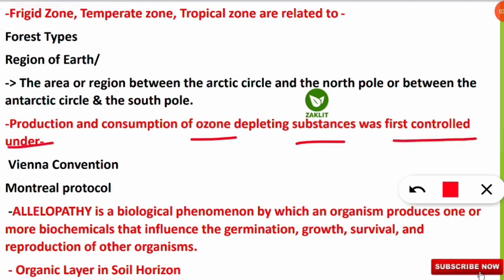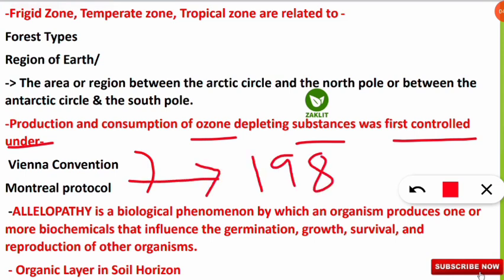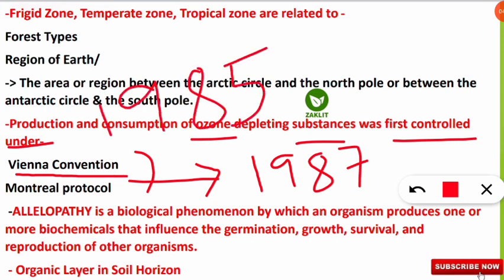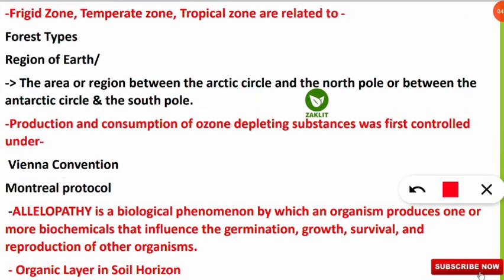The next question: production and consumption of ozone-depleting substances were first controlled under which convention or protocol? While Montreal Protocol (1987) is well known for controlling ozone-depleting substances, it was initially started at the Vienna Convention in 1985. The correct option is Vienna Convention, which was the first convention where control of ozone-depleting substances was discussed.